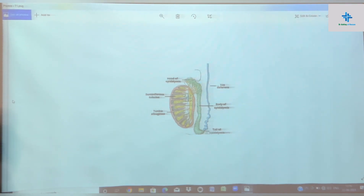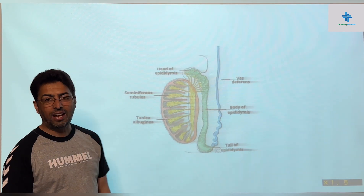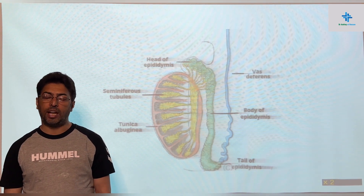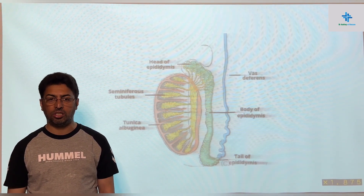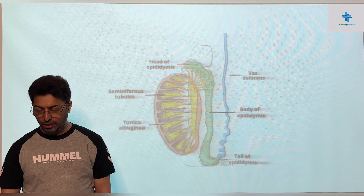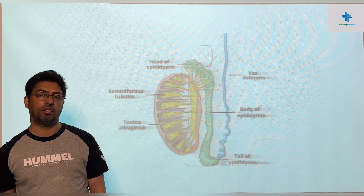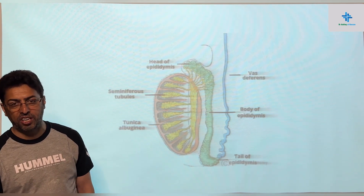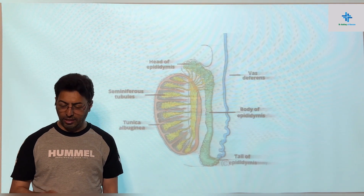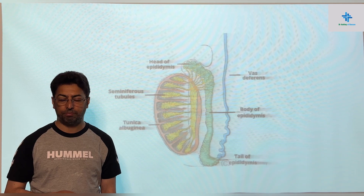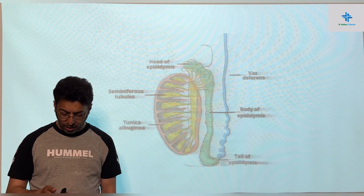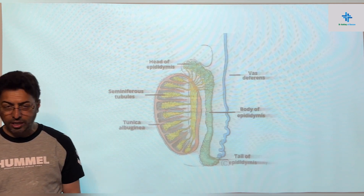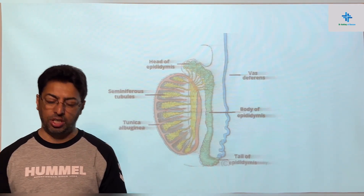As far as the testes are concerned, we are well aware of the scrotal sac. The scrotal sac is a cutaneous bag which lodges the testes and the spermatic cord. This scrotal sac has got the skin, the dartos muscle, the external spermatic fascia, the cremaster muscle, and the internal spermatic fascia applied to it. And once we just pierce the internal spermatic fascia, then we come directly to the testes.